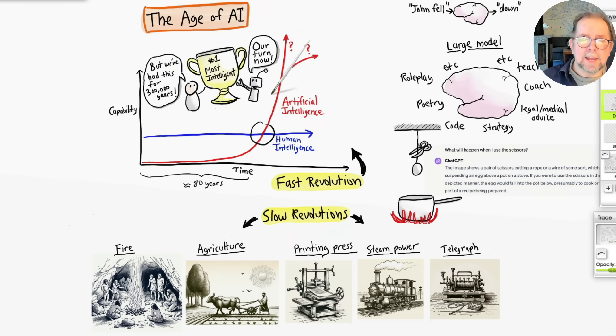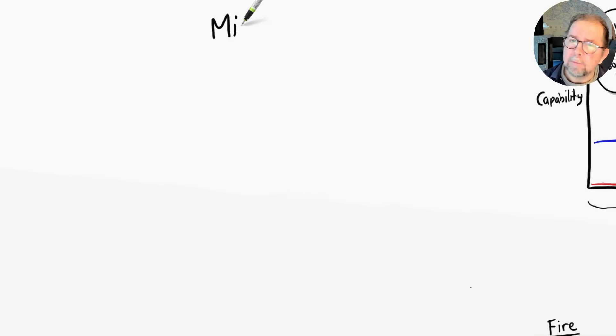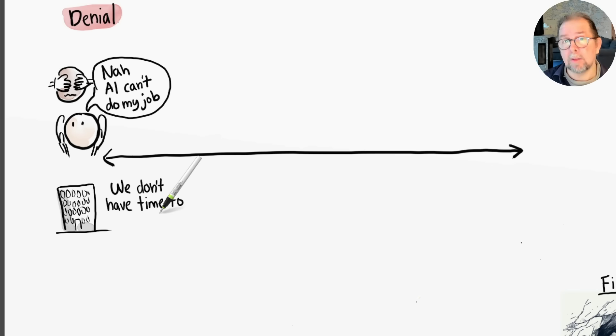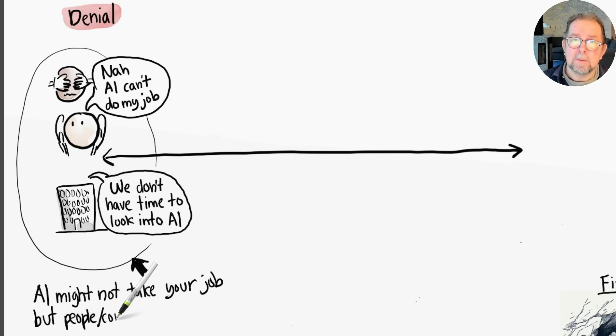I've noticed that people and companies tend to fall into different mindset categories when it comes to AI. On one side we have denial—the belief that AI cannot do my job, or we don't have time to look into this technology. This is a dangerous place to be. A common saying is: AI might not take your job, but people using AI will. And this is true for both individuals and companies. On the other side of the scale we have panic and despair—the belief that AI is going to take my job no matter what, AI is going to make my company go bankrupt.